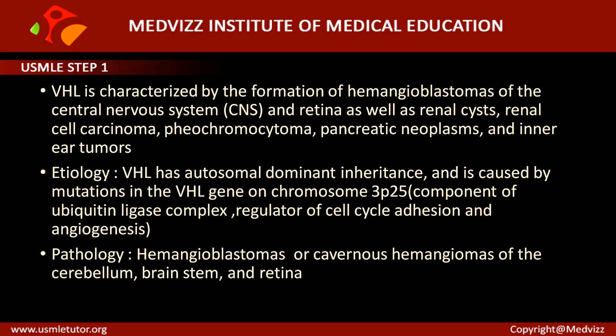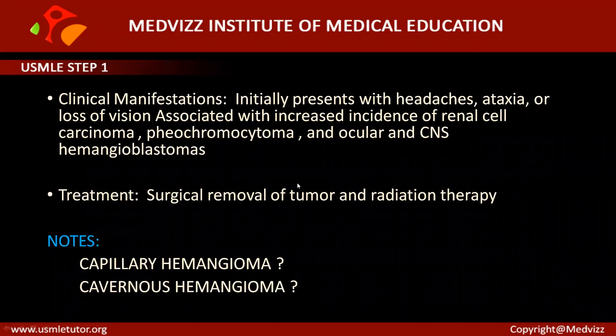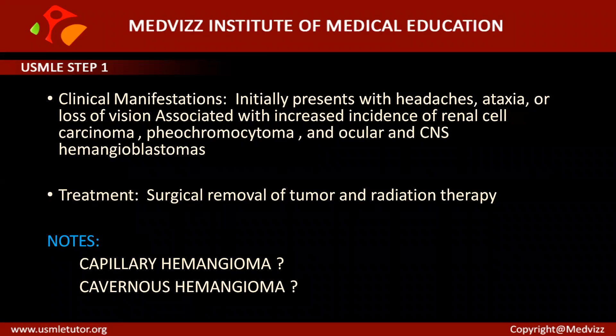The typical pathological picture is evident with hemangioblastomas. These hemangioblastomas are vascular neoplasms associated with a large cyst, and cavernous hemangiomas of the cerebellum, brain stem, and retina can be seen in this disease.